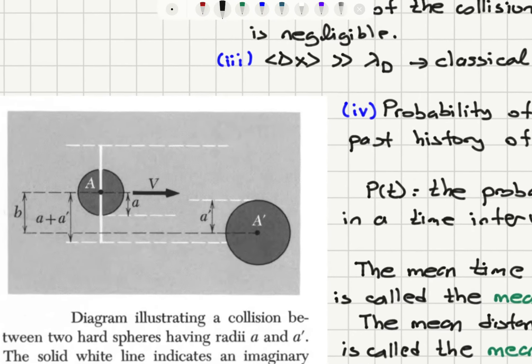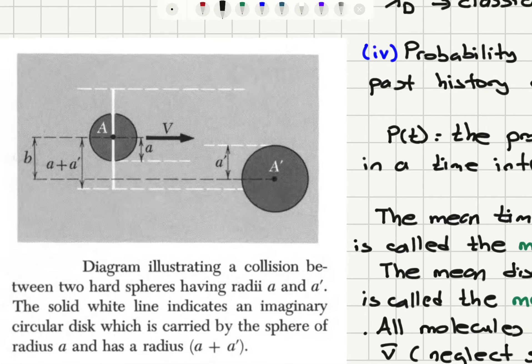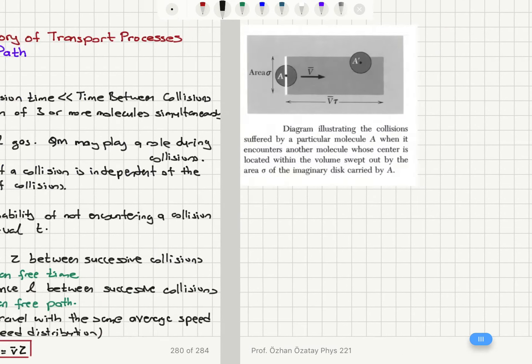Now imagine that we have a molecule A that has radius a that is approaching a slightly bigger molecule A' which has radius a' with a relative velocity V. And we call the distance between the two centers of these molecules B. So if B is less than a plus a' there will be a collision. If B is greater than a plus a' there is no collision. So the molecules will be scattered only if B is less than a plus a', in which case we're going to have an extremely large force developing between the two molecules.